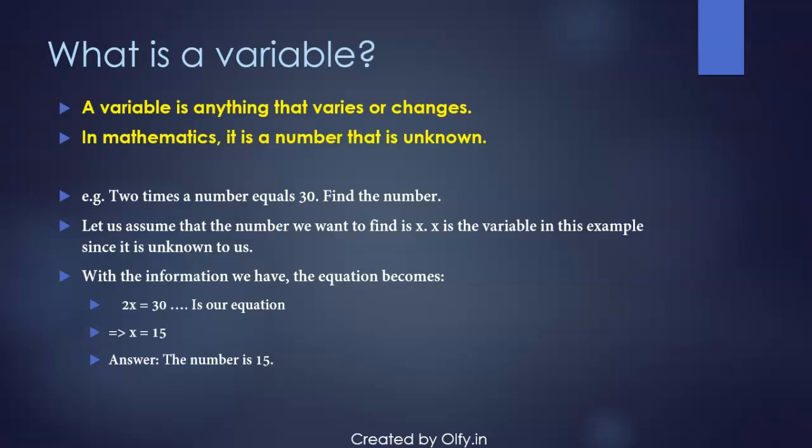Okay, so for example, you might be told 2 times a number equals 30 and you're asked to find the number. Well that number is unknown to us, right? So in this scenario, that number becomes a variable for us because it is unknown, its value is unknown to us.